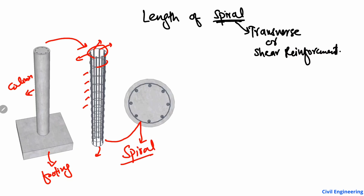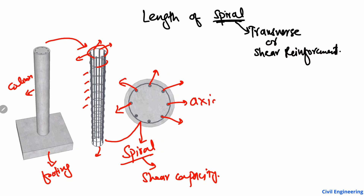The spiral reinforcement is the transverse reinforcement, and it is provided in order to increase the shear capacity of the column, or to confine the concrete, or to confine the main reinforcement. The steel bars are the main longitudinal reinforcement, provided to increase the axial capacity of the column. We also provide spiral reinforcement to confine this axial reinforcement and to confine the concrete.